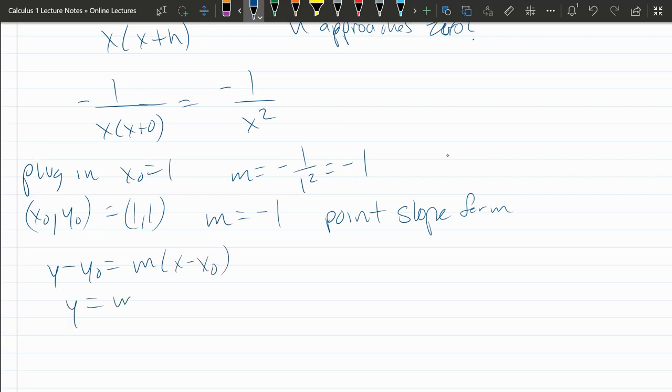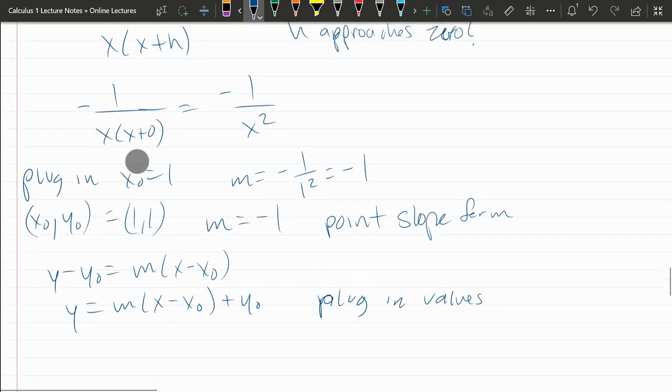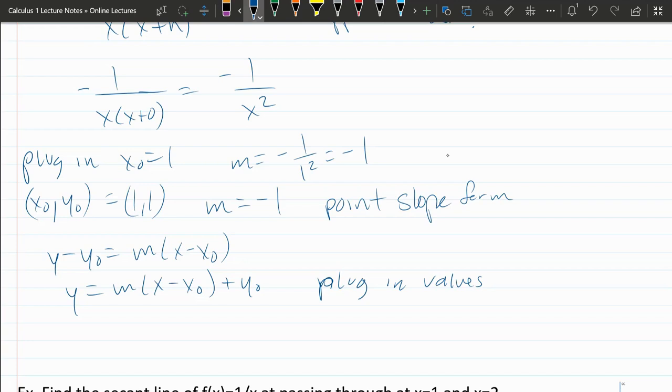So it's y minus y naught equals m times x minus x naught. I'm going to add the y naught to the right side. And now plug in values. So we have all the values on the top of the screen there. Negative one times x minus x naught is one plus one.